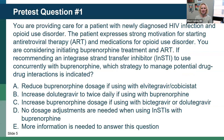We're going to start with a pre-test question. You're providing care for a patient with newly diagnosed HIV and opioid use disorder. The patient expresses a strong motivation for starting ART and medications for opioid use disorder. You're considering initiating buprenorphine and ART. If you were to recommend an integrase strand transfer inhibitor to use concurrently with buprenorphine, which strategy to manage potential drug-drug interactions is indicated? Would you A) reduce buprenorphine dosing if using elvitegravir with cobicistat? B) increase dolutegravir to twice daily if using buprenorphine? C) increase buprenorphine dosage if using bictegravir or dolutegravir? D) no dosing adjustments when using integrase inhibitors? Or E) need more information?